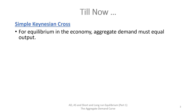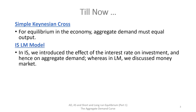Students, first we studied simple Keynesian cross. According to this, an economy is in equilibrium at a point where aggregate demand is equal to the level of output produced, or to aggregate supply. Next, we studied the role of interest rate in aggregate demand, and for that we introduced the IS curve. We introduced the LM curve to understand the role of the money market in the economy.